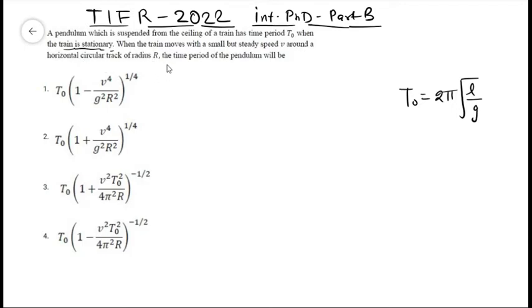Four options were given. Just by looking at those options, we can recognize that this cannot be the correct option and this cannot be the correct option, because just by looking at the dimensional analysis, the dimension is not of time.